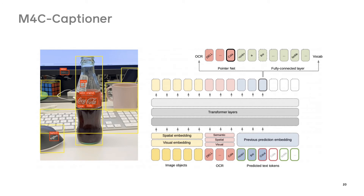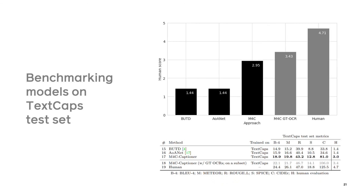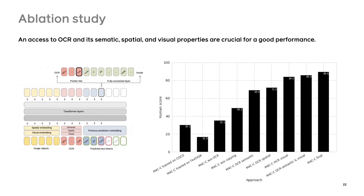M4C consists of a multimodal transformer and is able to copy OCR tokens in the predictions via a pointer network. Human evaluation showed that conventional models perform poorly on this task, while M4C does much better. There is still a large gap to human performance, which may be shortened with high-quality OCR data. The ablation study showed that the ability to copy OCR tokens, as well as access to their semantic, spatial and visual information, are crucial for good performance of the M4C model.